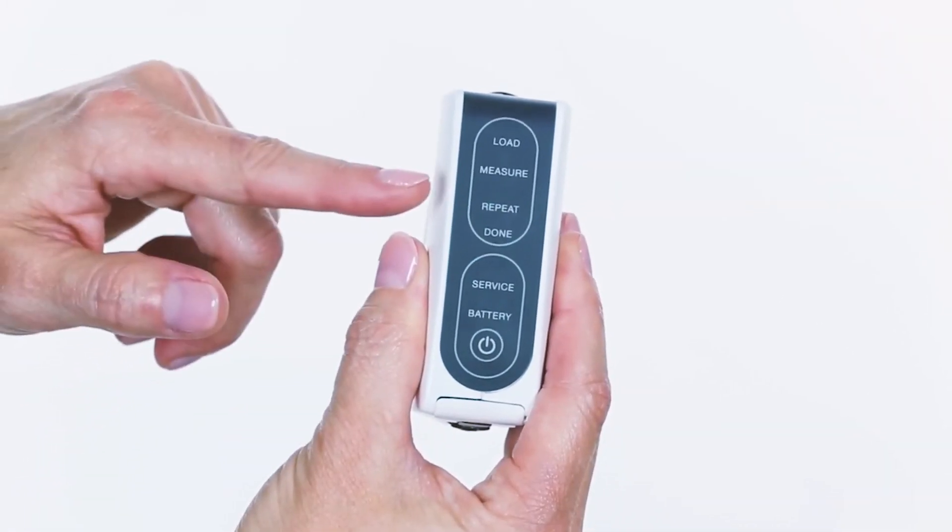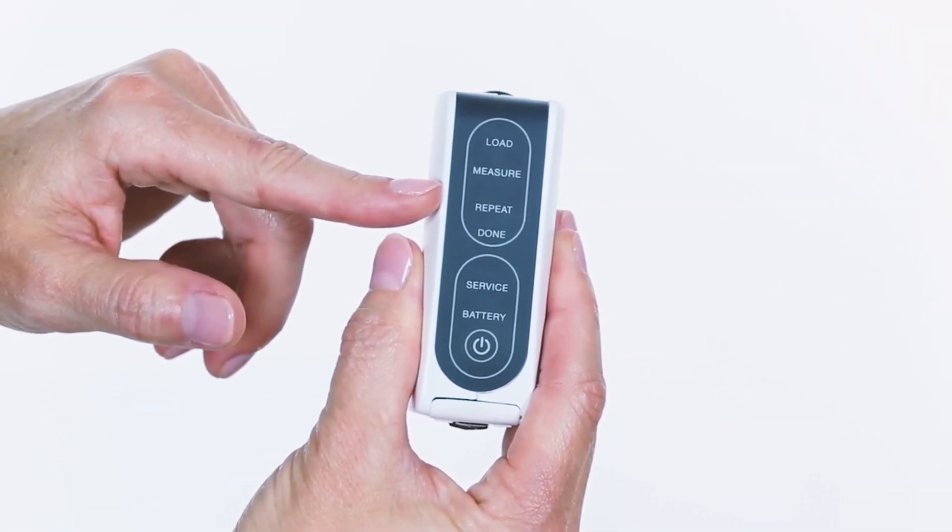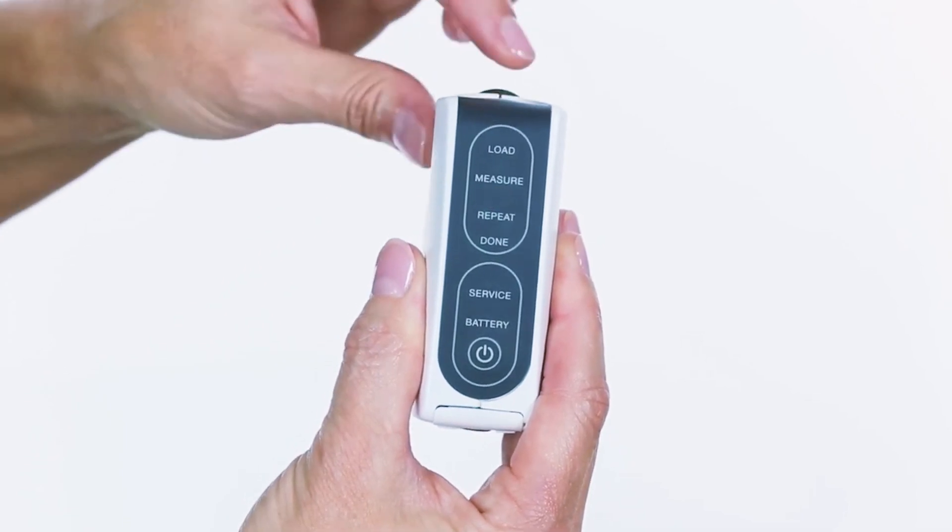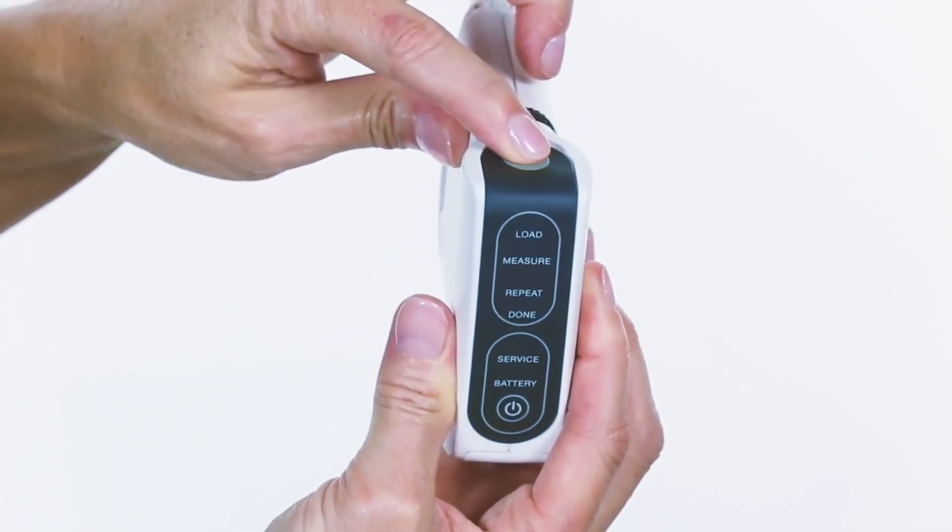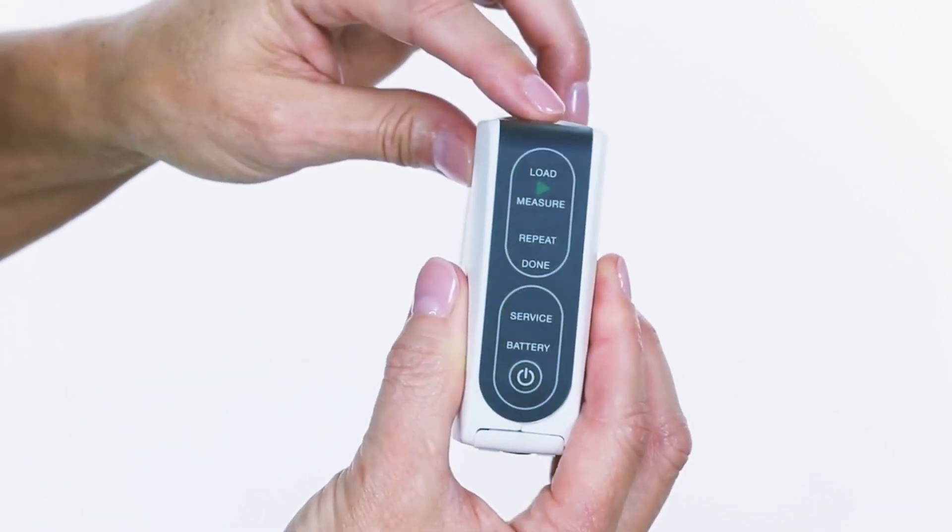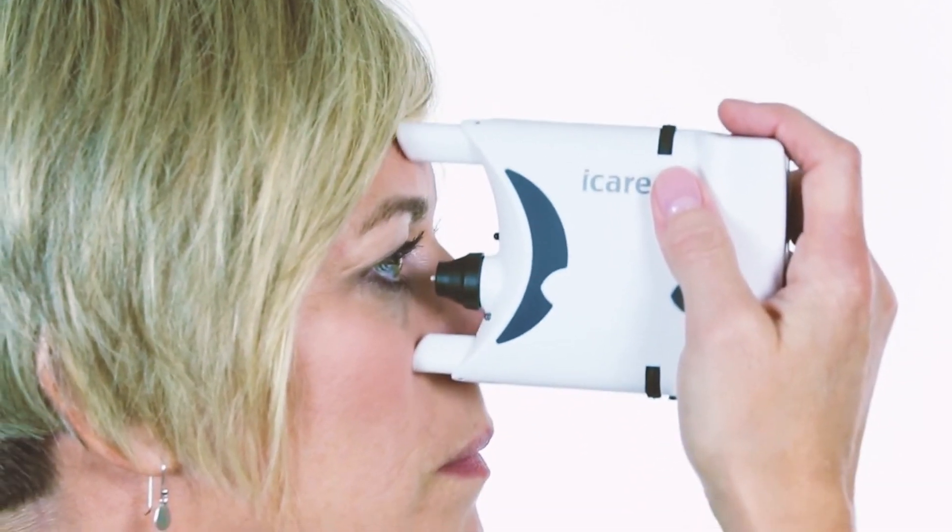If a measurement needs to be repeated, the repeat indicator light is visible on the display panel. Press the measurement button once to clear and continue measuring. Repeat the same steps for the second eye.